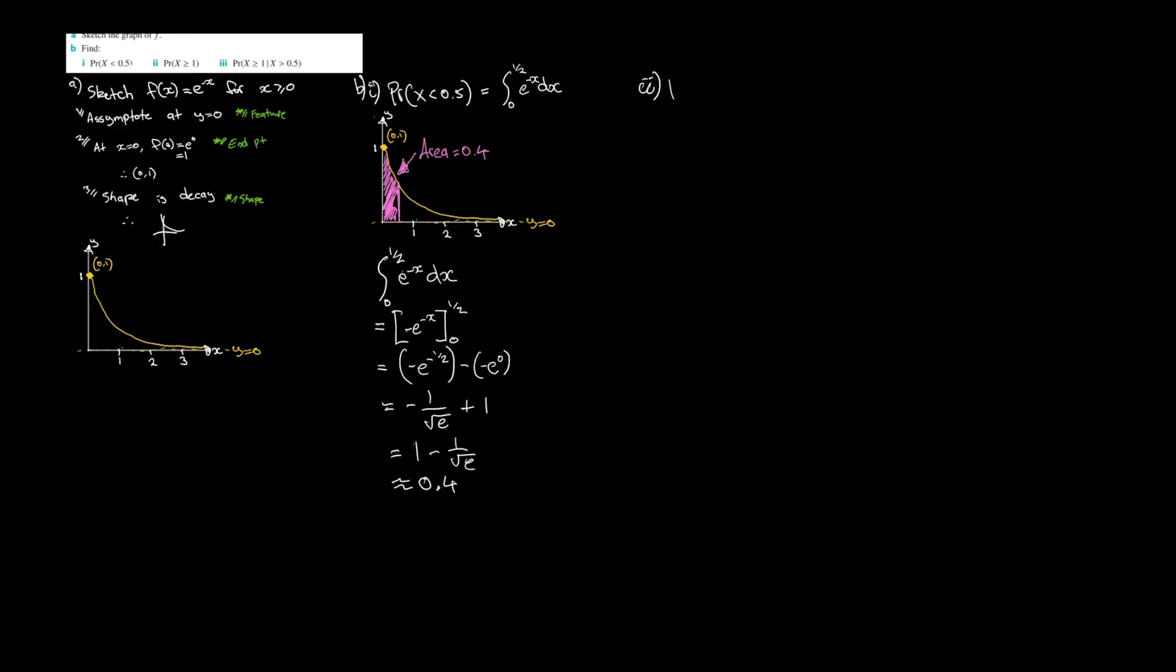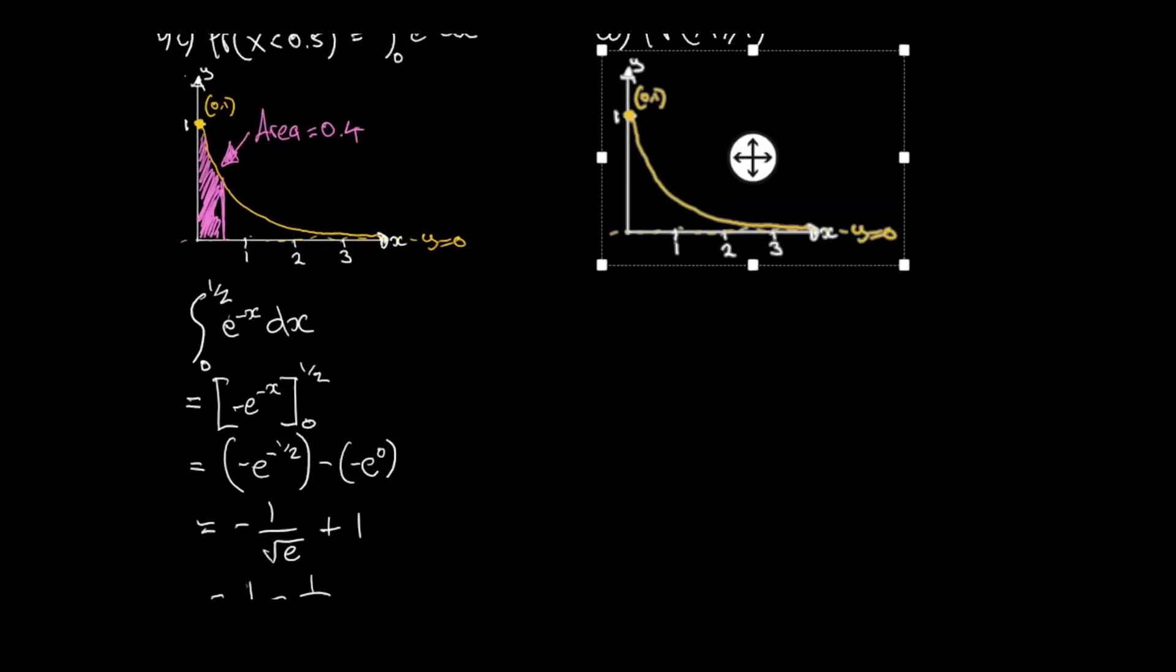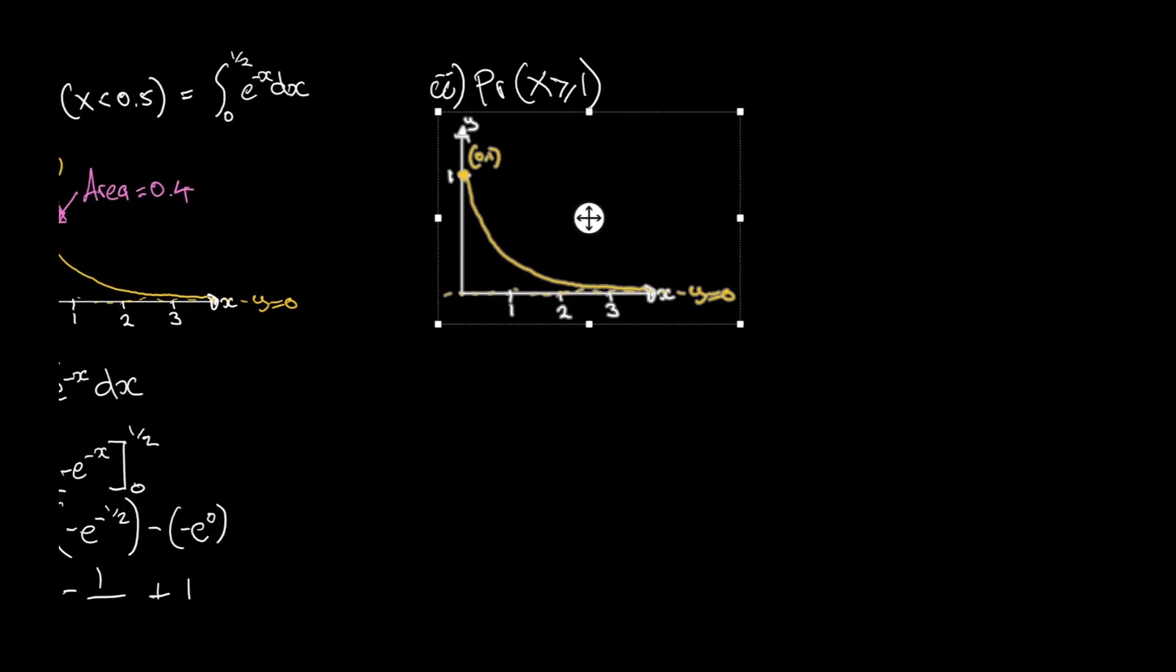Second one. We've got the probability that x, our variable, is going to be greater than or equal to 1. Let's paste this graph here. Let's illustrate what we're trying to find here when x is greater than or equal to 1. We're going to have x being 1, and it's going to be greater than it. So we're saying we're going to evaluate this between the integral of 1 to infinity of e to the negative x dx.